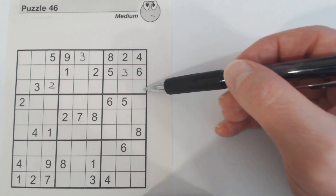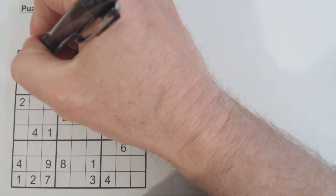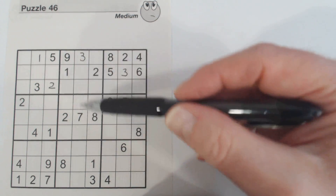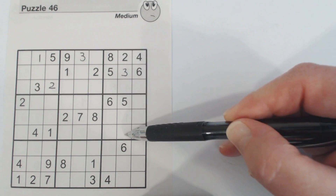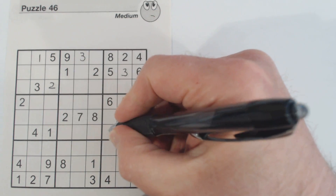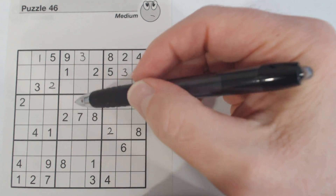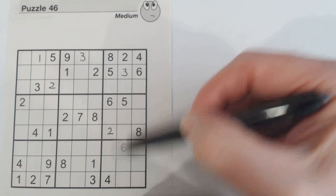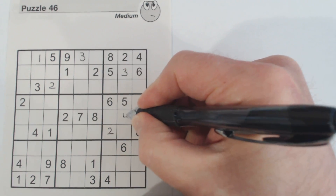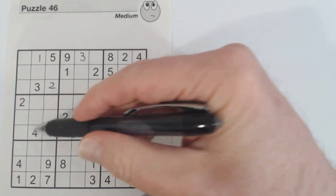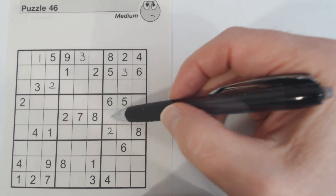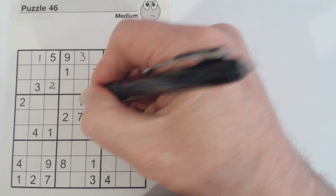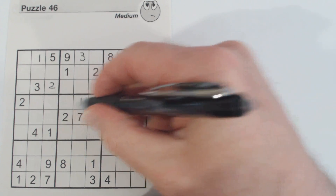The 1s: we place the 1 in the top section and there's already a 1 there. The 3s and 2s are already done. Moving to the middle section: placing the 2s — there's a 2 there already. For the 4s: there's a 4 there and a 4 there, so we can identify one more. For the 1s in the middle section: there's a 1 here and a 1 here, so we know that's a 1 right there. So we now have a 1 and a 4 placed.